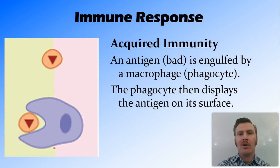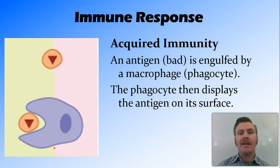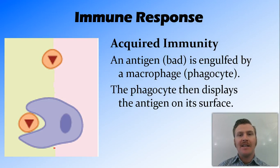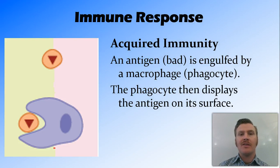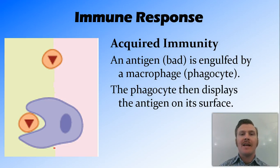The first step in immune response begins similarly to the non-specific response. A type of leukocyte called a macrophage engulfs the pathogen — and here we use the words pathogen and antigen synonymously; just remember that's the bad thing. The macrophage then displays the antigen on its surface. If this is a new antigen that the body hasn't encountered before, it can't recognize it as something it's fought before, so we stop at the non-specific response.